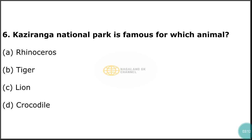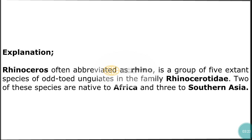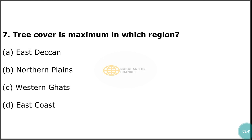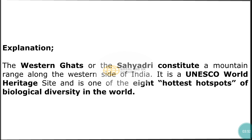Question number 6: Kaziranga National Park is famous for which animal? The correct answer is option A — rhinoceros. Rhinoceros, often abbreviated as rhino, is a group of five extant species in the family Rhinocerotidae. Two of these species are native to Africa and three to southern Asia. Question number 7: Tree cover is maximum in which region? The correct answer is option C — Western Ghats. The Western Ghats constitute a mountain range along the western side of India. It is a UNESCO World Heritage Site and one of the hottest hotspots of biological diversity in the world.